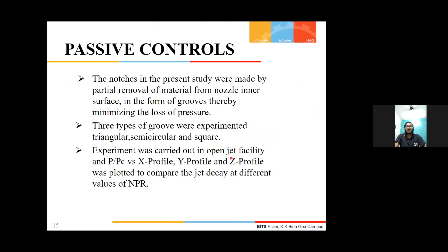In the present study, the notches were made by partial removal of material from the throat of the nozzle. Three types of notch geometries were compared: triangular, semi-circular, and square. The experiment was carried out in an open jet facility where P by Pc versus X-profile, Y-profile, and Z-profile were plotted. X-profile is the axis along the centerline of the jet exhaust. P stands for pitot pressure in the jet field, while Pc stands for pitot pressure along the jet centerline.